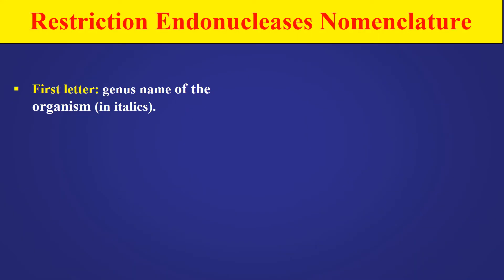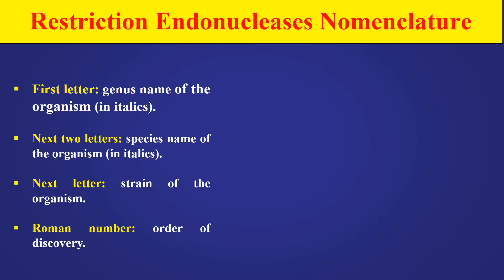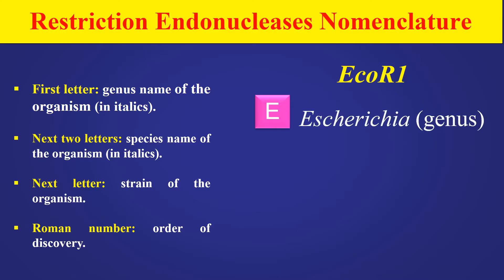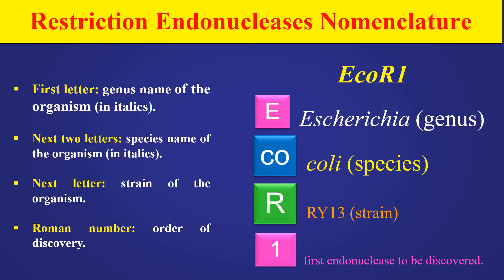Now, the nomenclature — how we can name these Restriction Enzymes. The first letter of their name indicates the genus of the particular organism which produces that specific enzyme. The next two letters represent the species of that organism, and the next letter indicates the strain. Finally, the Roman numeral gives the order of discovery of that restriction endonuclease enzyme. For example, the enzyme EcoRI: E indicates the genus Escherichia, CO indicates the species coli, R indicates the strain RY13, and 1 means it is the first endonuclease discovered in E. coli.